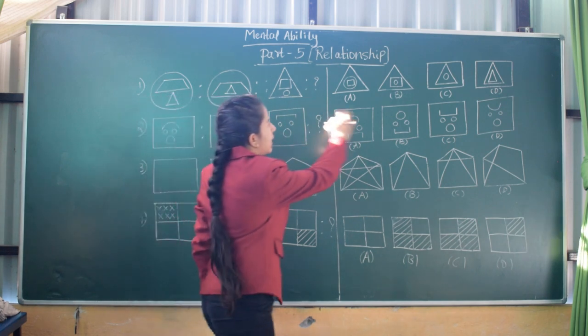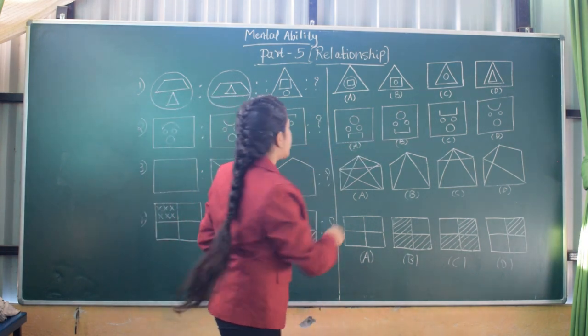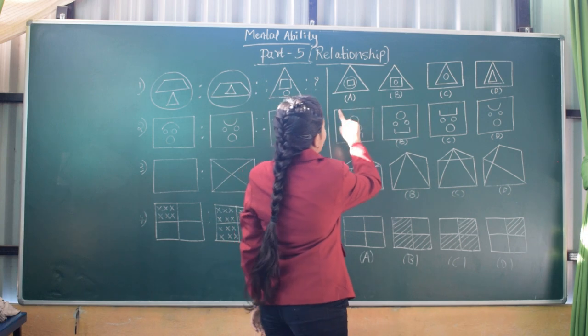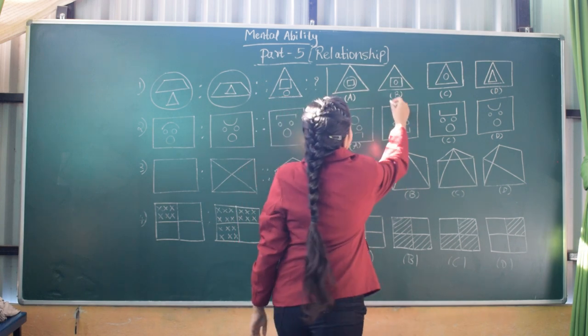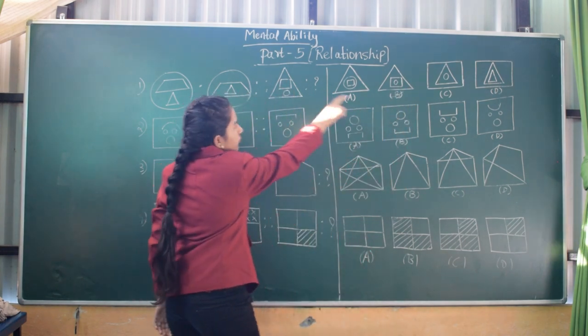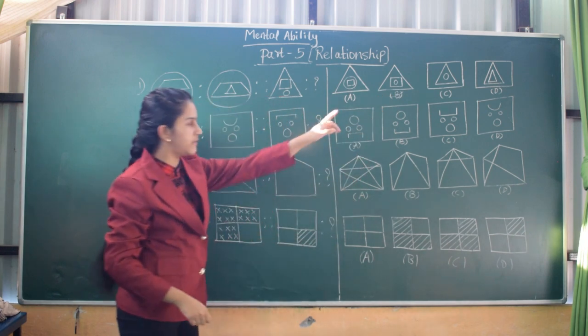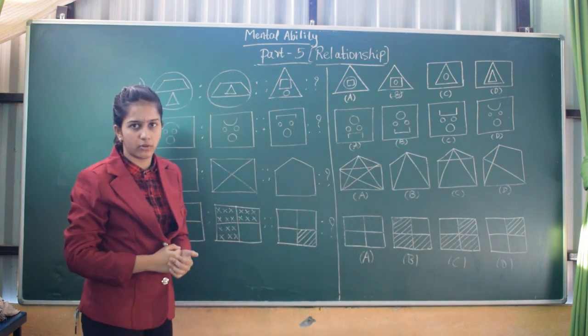We will find an answer figure which is similar to that. B is similar because the circle is inside the square in B, and in no other figure is it similar. So B is the answer.